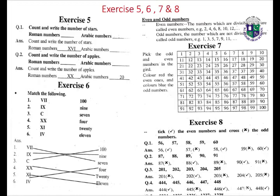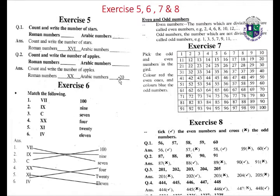Exercise five: count and write the number of stars in Roman numbers and Arabic numbers. Count and write the number of stars — Roman numbers: sixteen, eighteen, sixteen, nineteen.